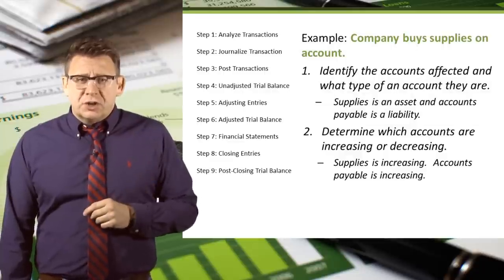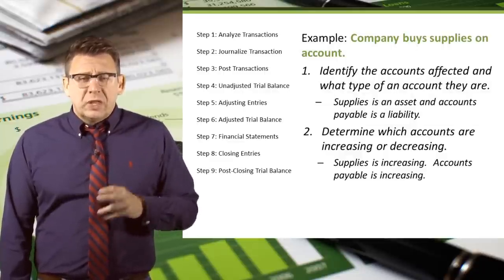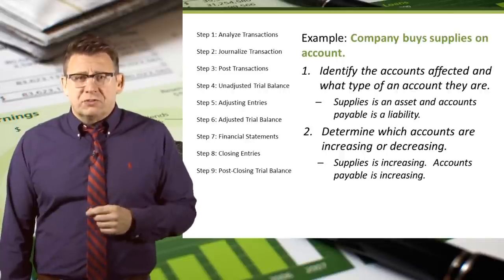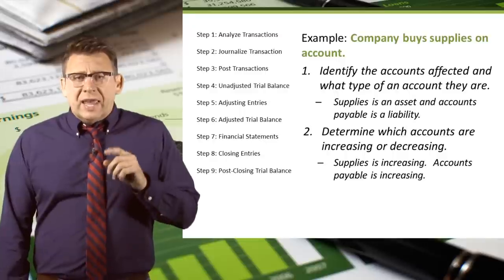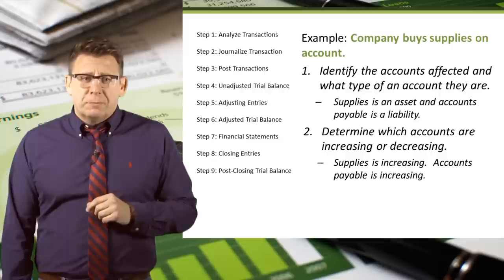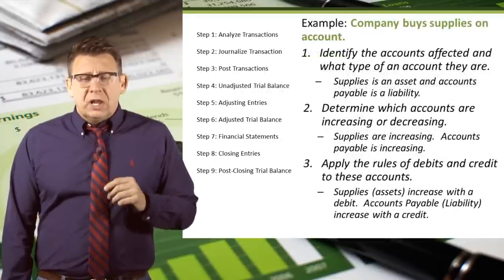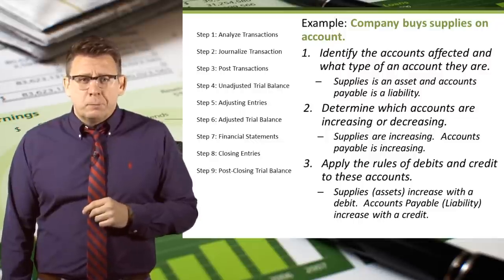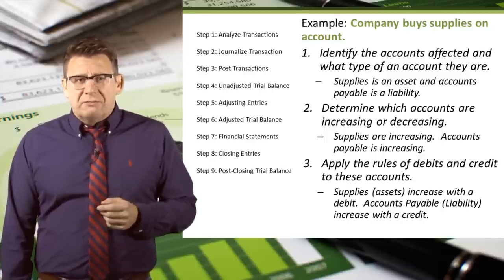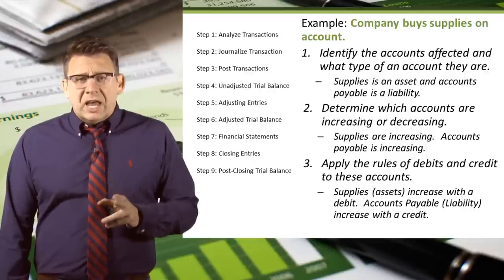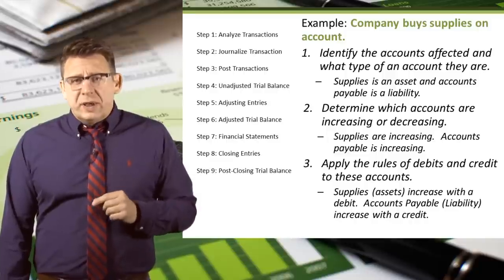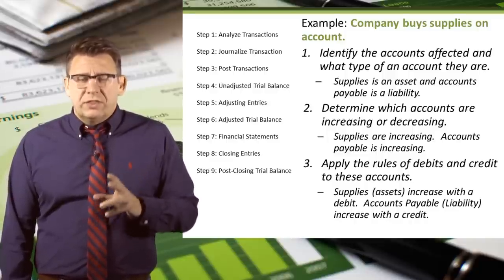Part two is determine which accounts are increasing or decreasing. In this example, supplies is increasing because we have more supplies after this transaction than we had before. Accounts payable is also increasing because we owe more money after this transaction than we did before. Part three is applying the rules of debits and credits: supplies is an asset account and assets are increased with debits. Accounts payable is a liability account and liabilities are increased with credits.